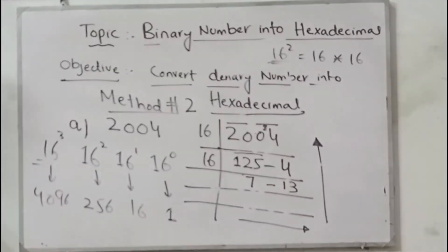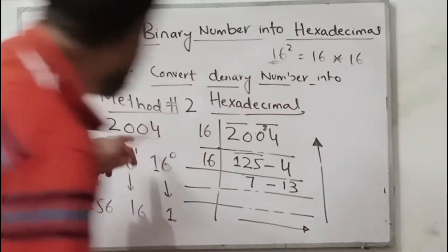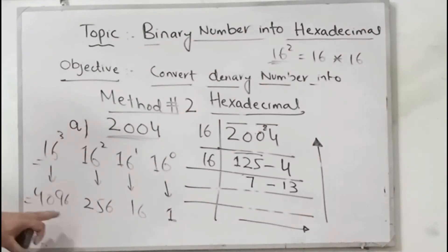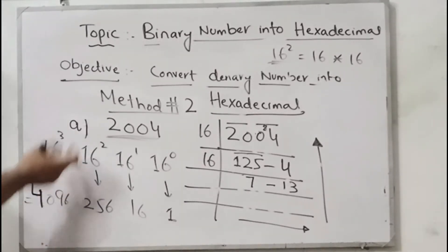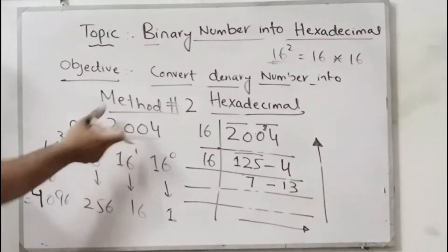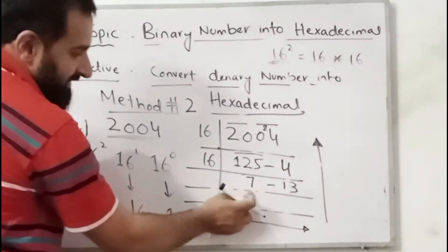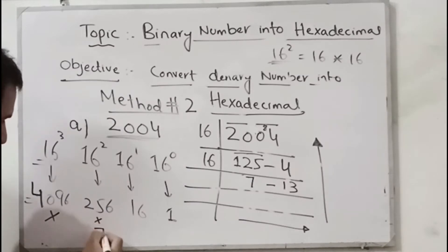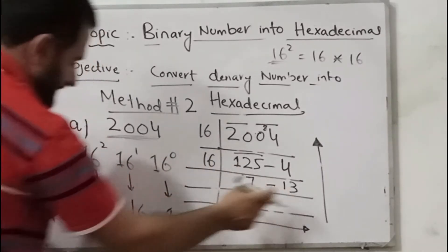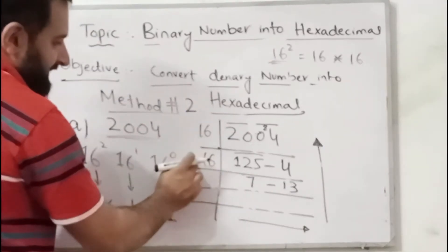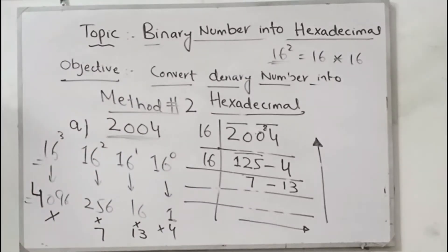So it gives you 4096. Now we need to find this number. We need 2004 as our decimal number. We don't need 4096 because it exceeds our required value, so we will ignore it. We will pick 256, and multiply 256 by 7. Then multiply 16 by 13, and multiply 1 by 4, which is the last remainder digit.